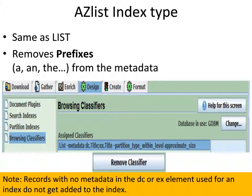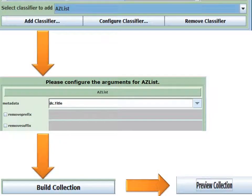A solution to the filing problem for that type of collection can be to change from the list index type to the AZ list index type. What that does is remove any prefixes from the metadata, so 'A' and that sort of stuff is not counted as part of the sorting sequence. This will put things in a more ALA-like sort order so that your physical files, when brought over to a digital collection, may end up in the same place.